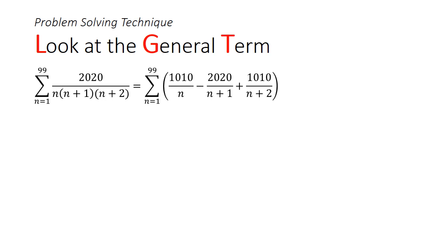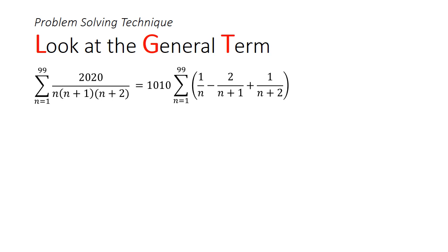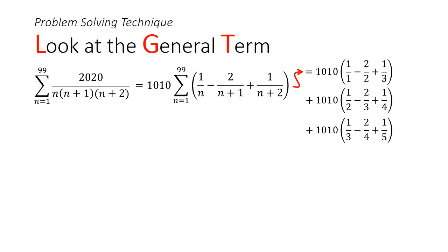With the general term expressed as partial fractions, we factor out 1010. Substituting n=1 to 99, we spot the telescopic cancellation: for n=1 we get 1010(1/1 − 2/2 + 1/3); for n=2 we add 1010(1/2 − 2/3 + 1/4); for n=3, 1010(1/3 − 2/4 + 1/5). Terms like −1/3, −2/3, and +1/3 cancel, and 1/4 − 2/4 + 1/4 also cancels. This pattern continues throughout.